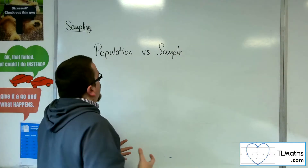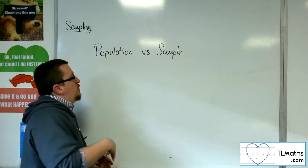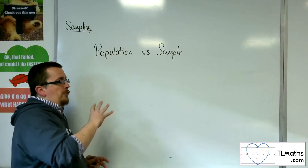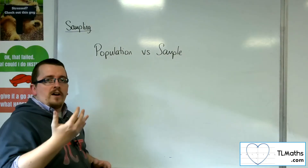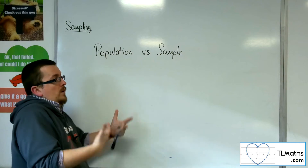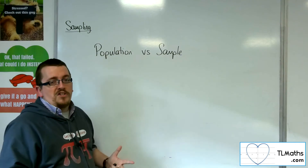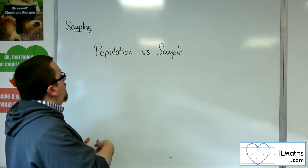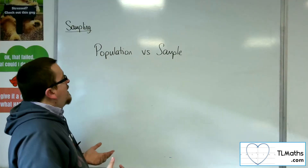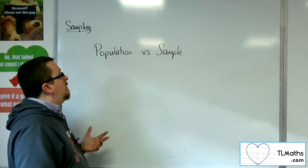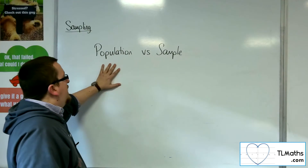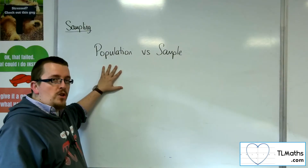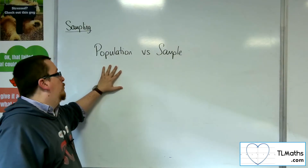So when you're looking at population versus sample, you've got to be thinking about answering questions designed to test which one would be best in which situation. Can it be physically done? If you're looking at the heights of trees, for example, I can't really look at the whole population — I can't go out and measure the heights of all the trees.